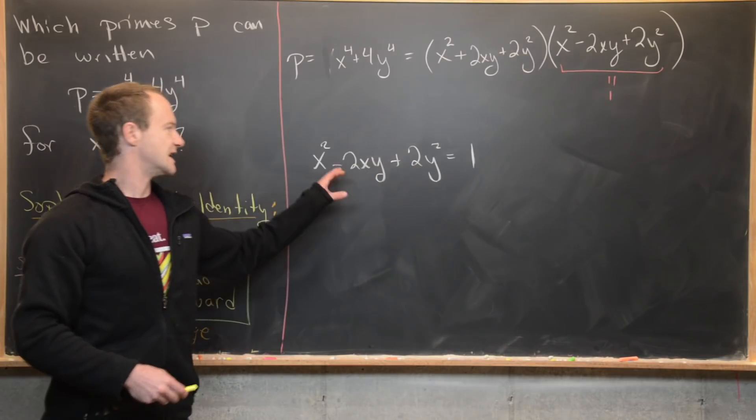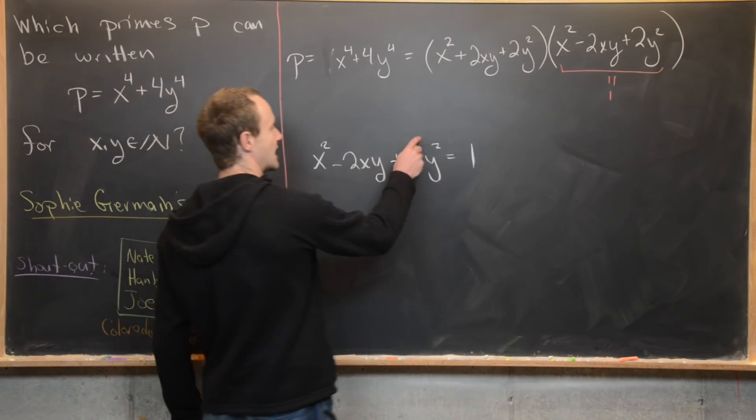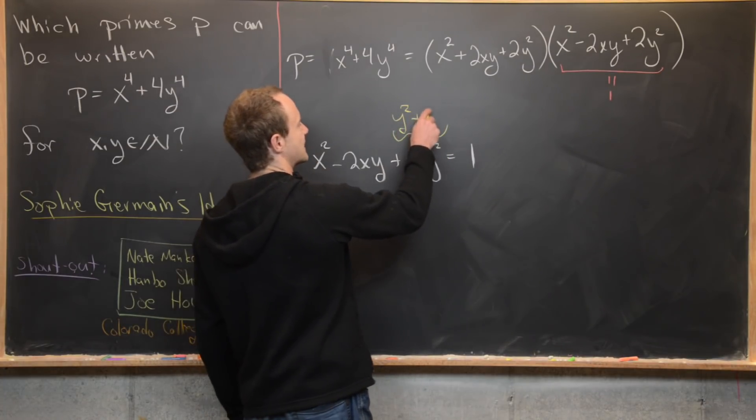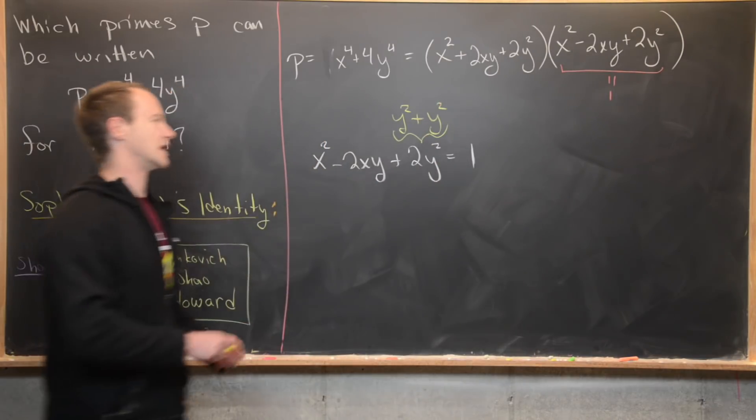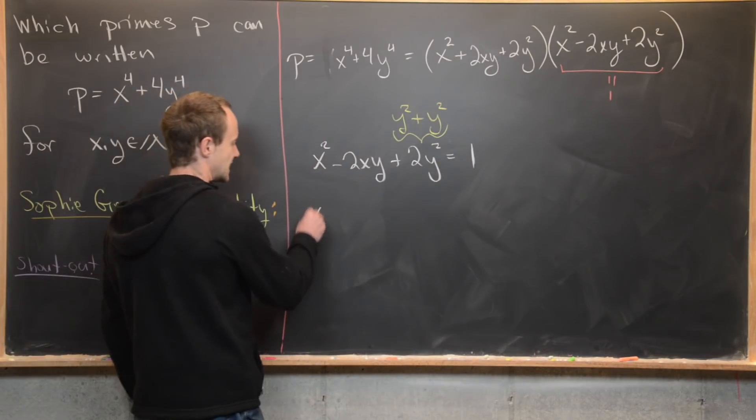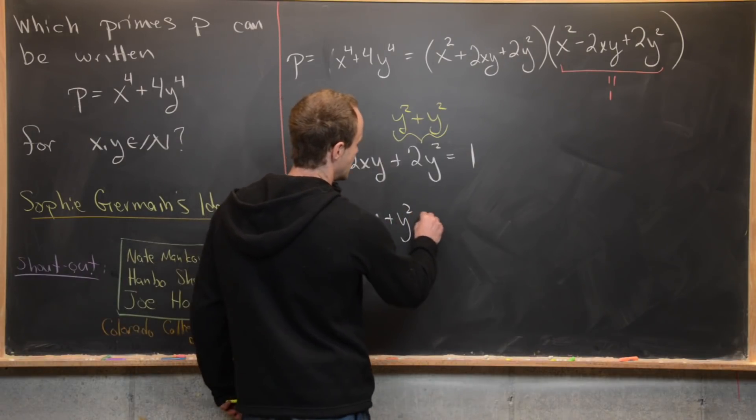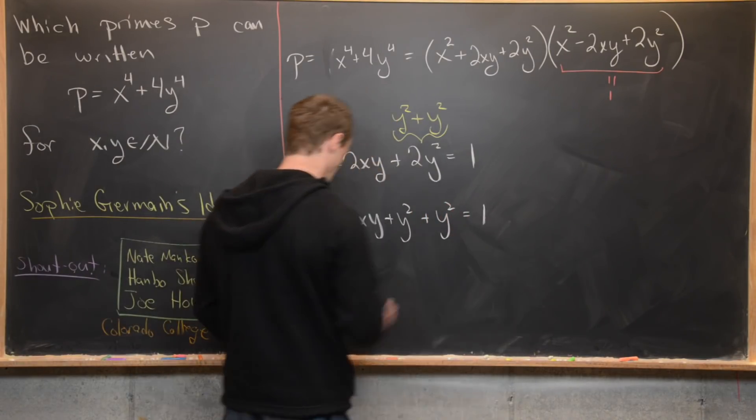The trick is that we almost have a perfect square binomial, and we will have a perfect square binomial if we split this up into y squared plus y squared. So notice that gives us x squared minus two xy plus y squared plus y squared equals one like that.